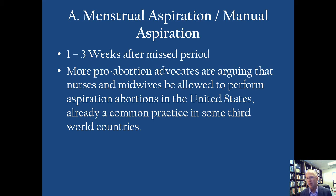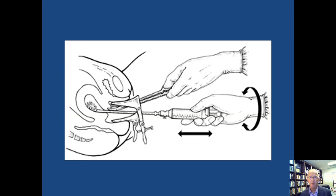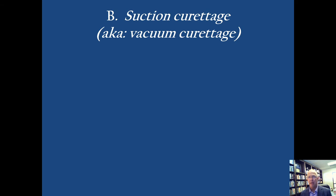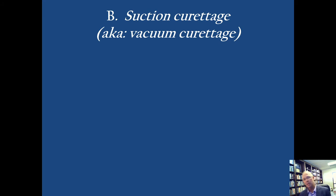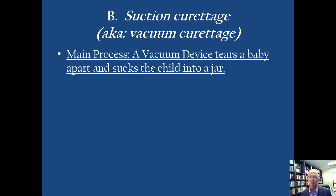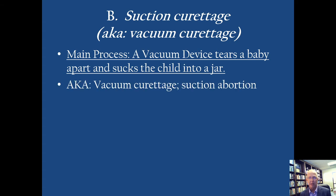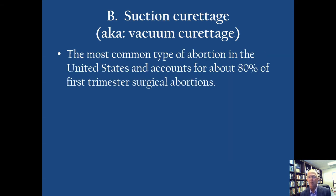Manual aspiration is not very frequent here in the United States. You may encounter it more frequently in a missions environment on the third-world mission field. But when most people think about an abortion in the United States, the most common type is called suction curettage — vacuum curettage. If you say suction abortion, that's what most people call it. In the United States context, when people think of an abortion, this is what they have in mind. A vacuum device tears a baby apart and sucks it into a jar. It is a horribly violent act, and it is the most common type of abortion.